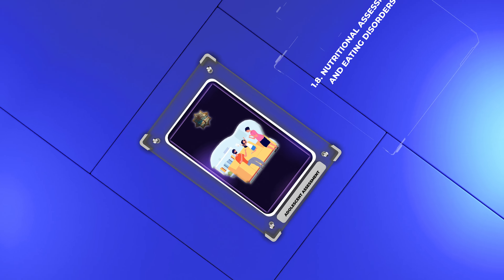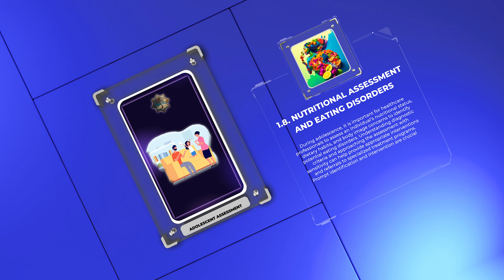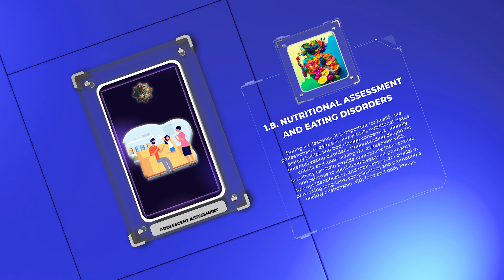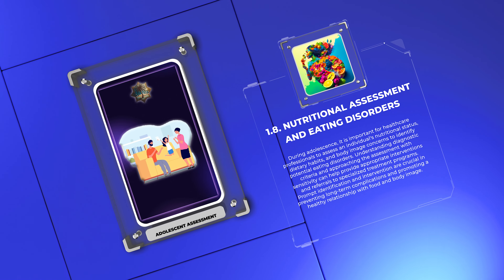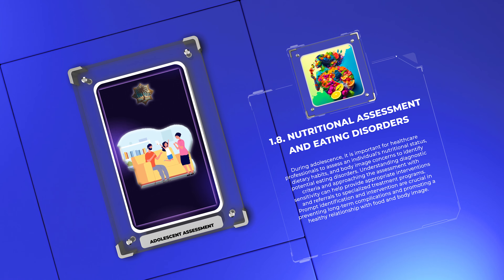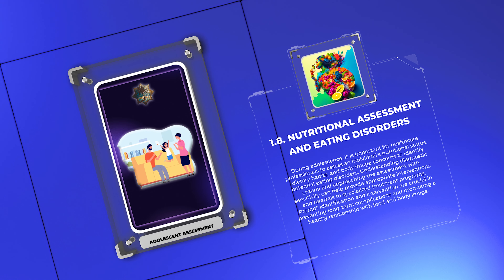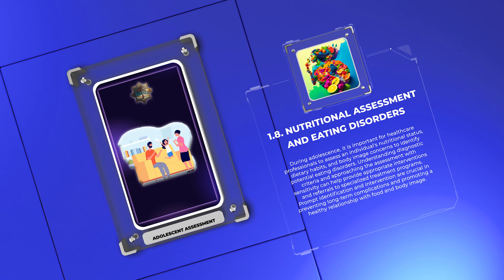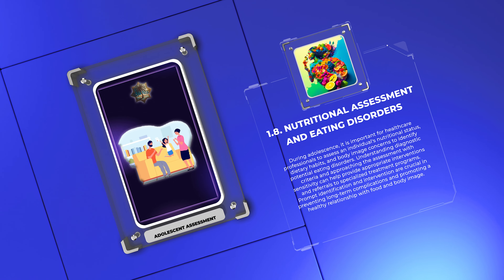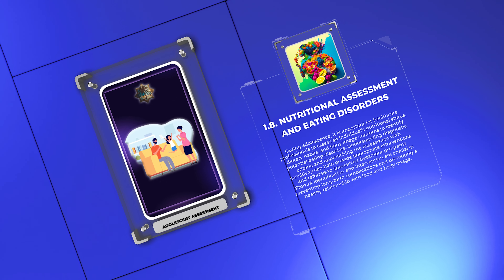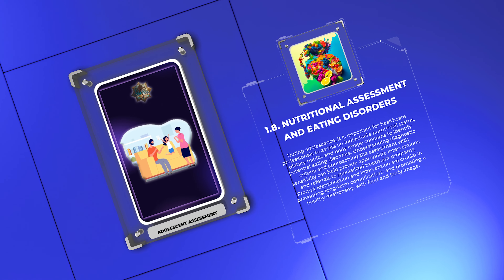During adolescence, it is important for healthcare professionals to assess an individual's nutritional status, dietary habits, and body image concerns to identify potential eating disorders. Understanding diagnostic criteria and approaching the assessment with sensitivity can help provide appropriate interventions and referrals to specialized treatment programs. Prompt identification and intervention are crucial in preventing long-term complications and promoting a healthy relationship with food and body image.